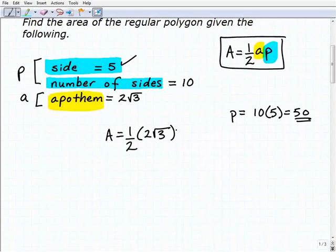So that's what we have to plug in right here. So we have one-half times 2 times the square root of 3 times 50.